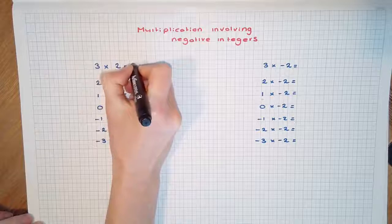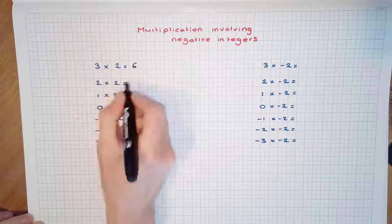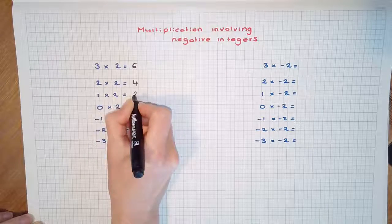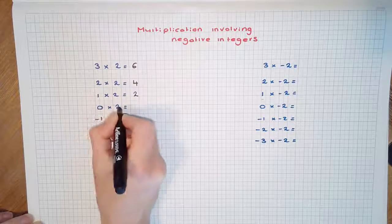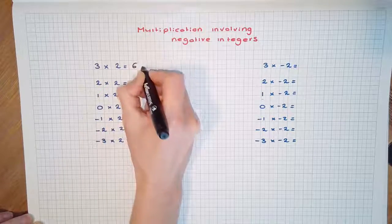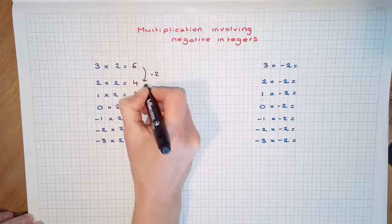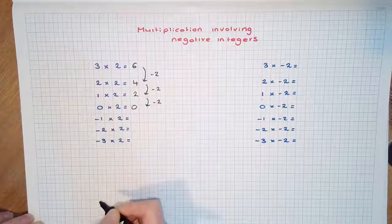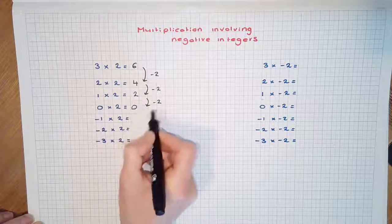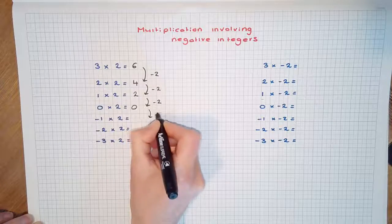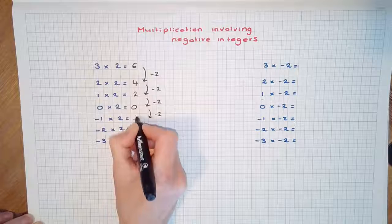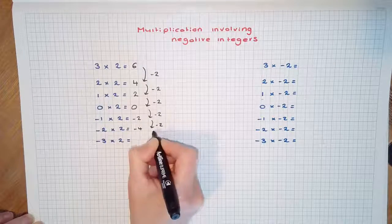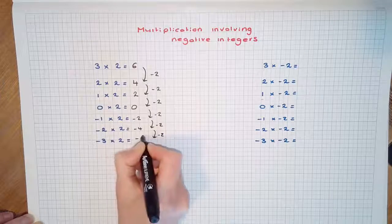3 times 2 is 6, 2 times 2 is 4, 1 times 2 is 2, and 0 times 2 is 0. You can see that the pattern is decreasing by 2 each time. So it makes sense that 0 take away 2 would be negative 2, and negative 2 take away another 2 would be negative 4, and so the pattern continues.